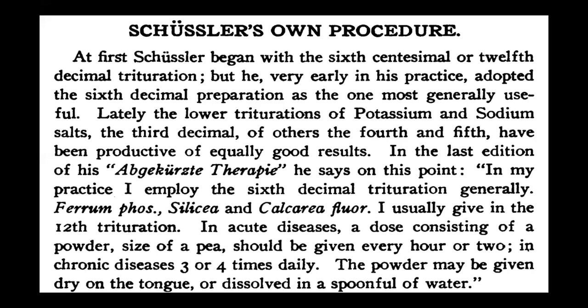That was his experience. His experimentation explained something regarding those things, and that's why he explained that 6x is the better potency to advocate for such patients. In acute diseases, a dose the size of a pea should be given every hour or two. In chronic diseases, three or four times a day. Here it has been clearly mentioned — in acute disease you can repeat the dose one hourly, two hourly, three hourly depending upon the case, and in chronic cases, three or four times daily.